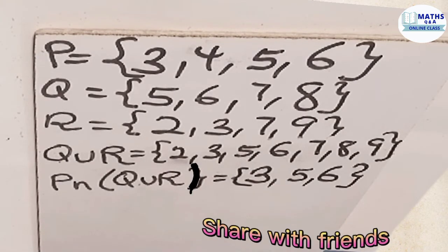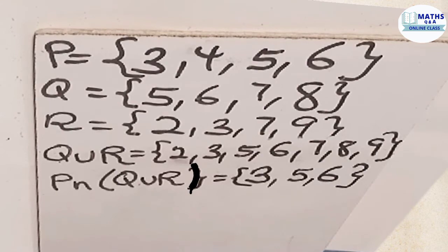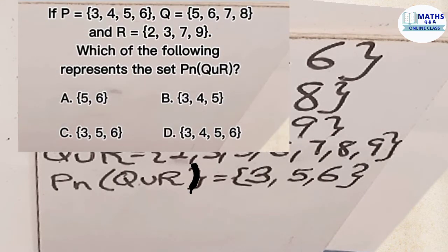Now let's compare the answer that we had to the options given to us. Which of the options do you think is correct? The first option is 5, 6. The second one is 3, 4, 5. The third one is 3, 5, 6. And the last one is 3, 4, 5, 6. So what is the correct answer? The correct answer is C which is 3, 5, 6.